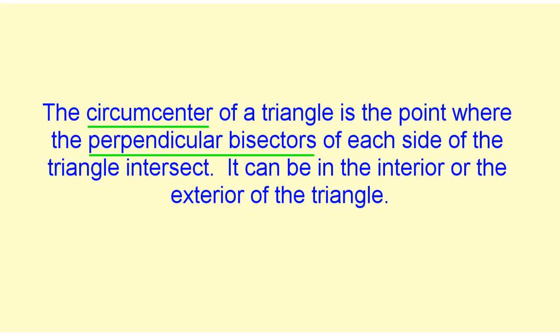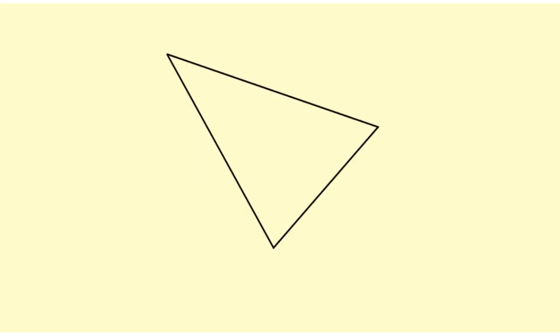The circumcenter of a triangle is the point where the perpendicular bisectors of each side of the triangle intersect. It can be in the interior or the exterior of the triangle. To find the circumcenter of this triangle we need